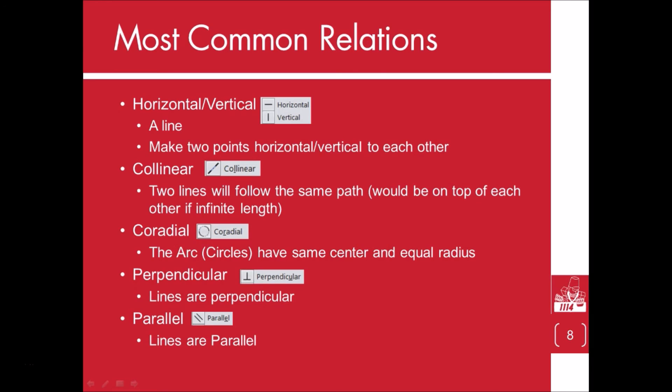Coradial makes two arcs or circles have the same center point and same radius. Perpendicular makes two lines perpendicular to each other. Parallel will make two lines parallel to each other.